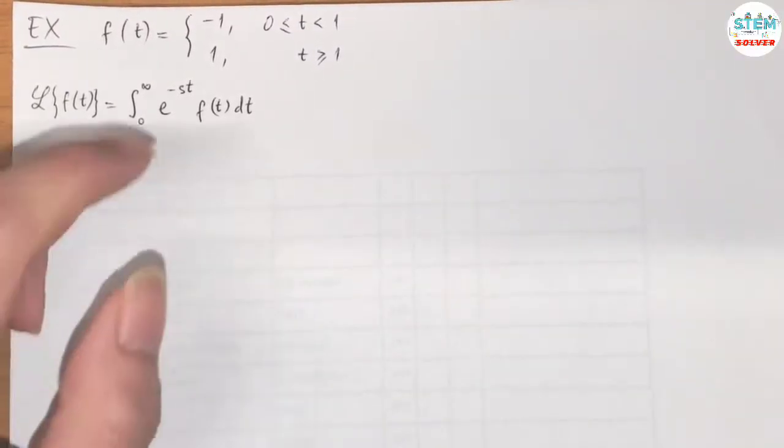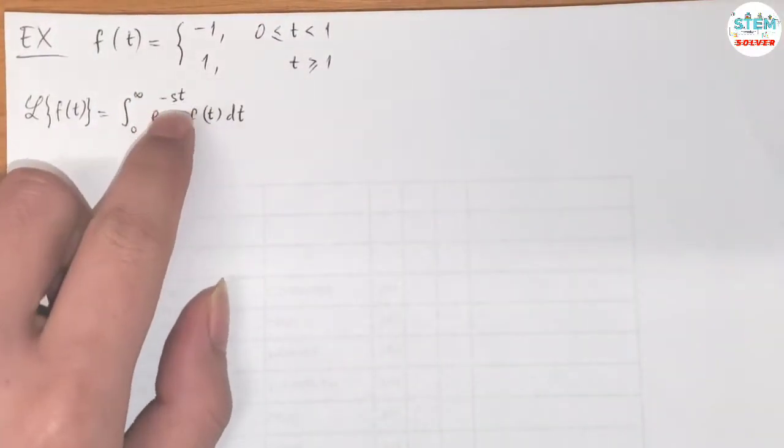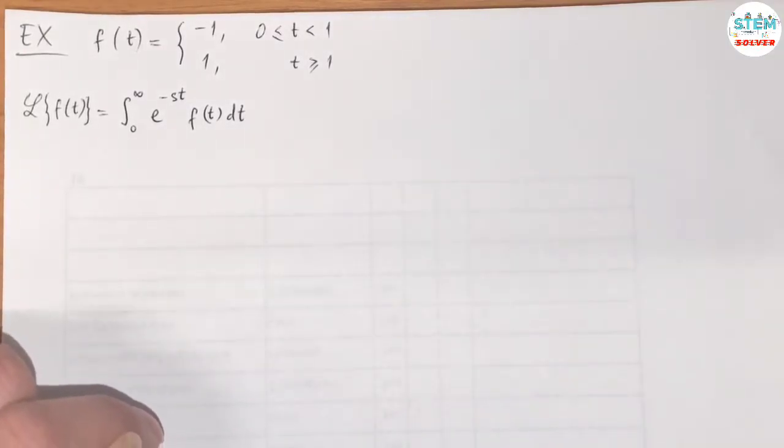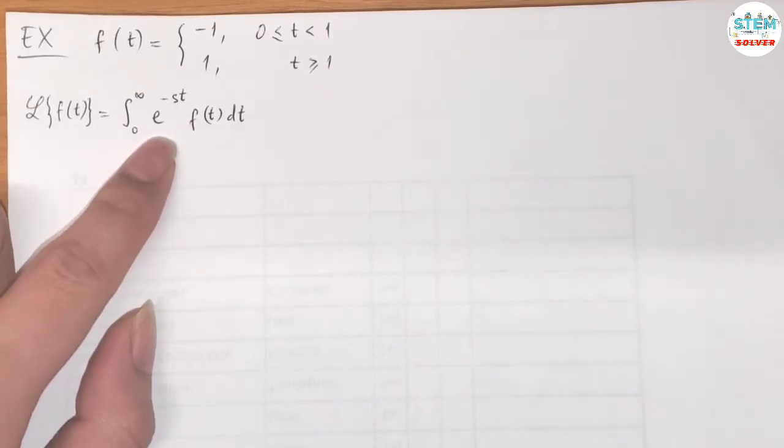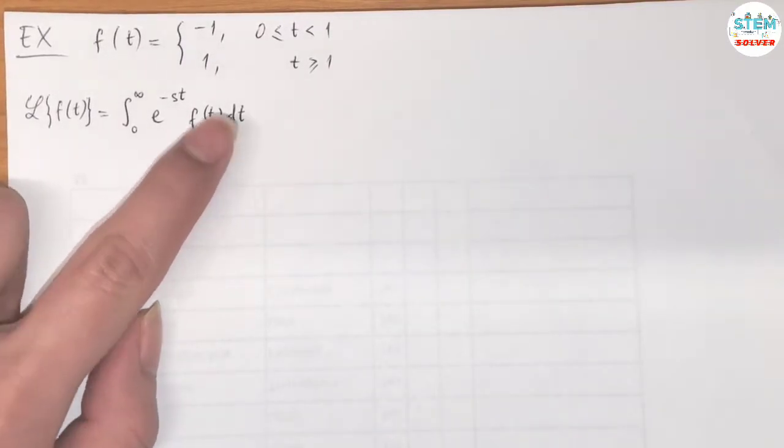Find the Laplace transform of this piecewise function. By the definition, we have the Laplace transform of f is equal to the integral from 0 to infinity of e to the negative st times f dt.